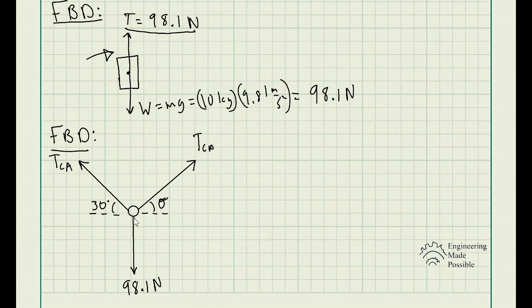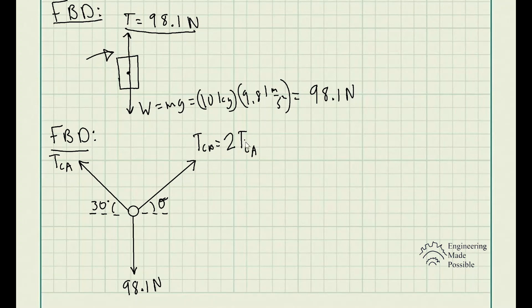We're drawing the tensions in all the cables: 98.1 newtons going down, tension in cable CB, and tension in cable CA. Another thing given in the problem statement is that the tension in cable CB is equal to twice that of the tension in cable CA. When it comes to these word problems, you have to read carefully. It states cable CB is subjected to a tension twice that of cable CA, so 2 × TCA = TCB.